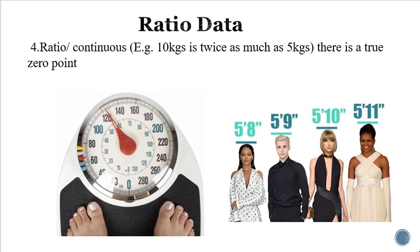The last type of data is called ratio data, which has some kind of zero point value. For example, weight may be zero. Height of a person, weight of an object — anything which can be measured and which has an absolute zero value is called ratio data.